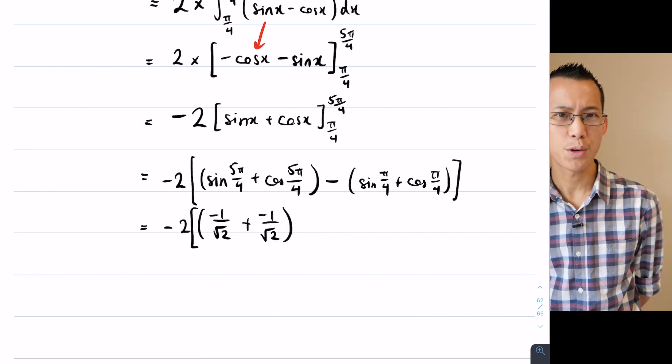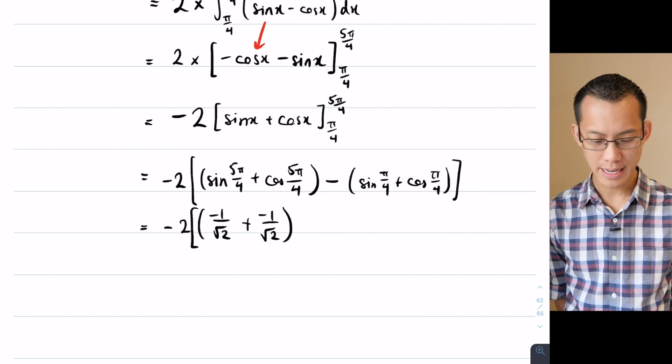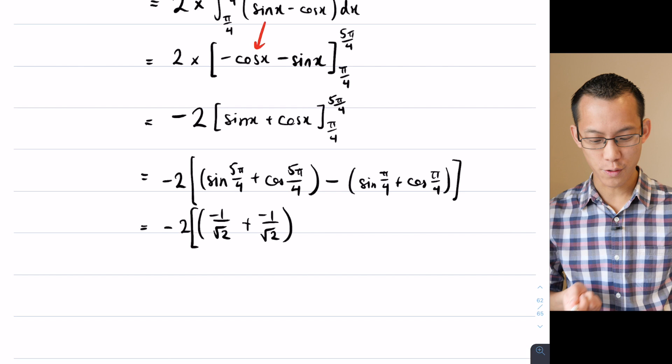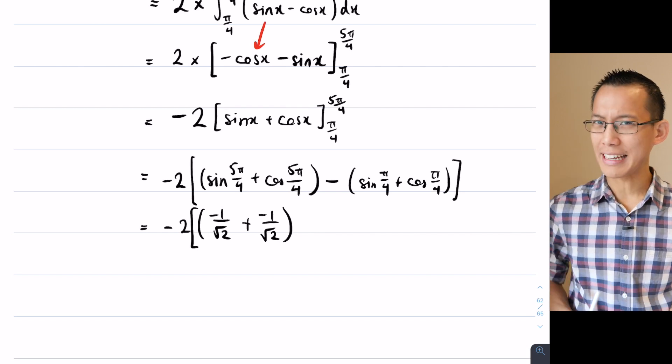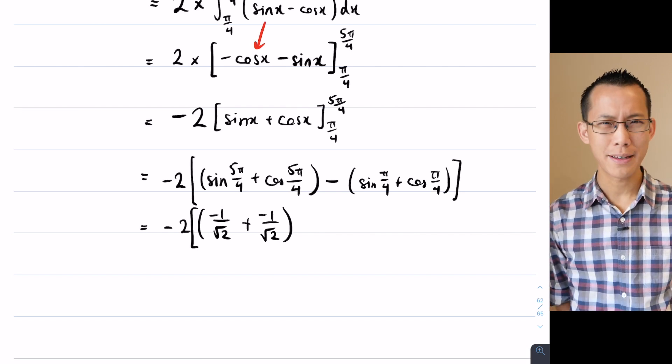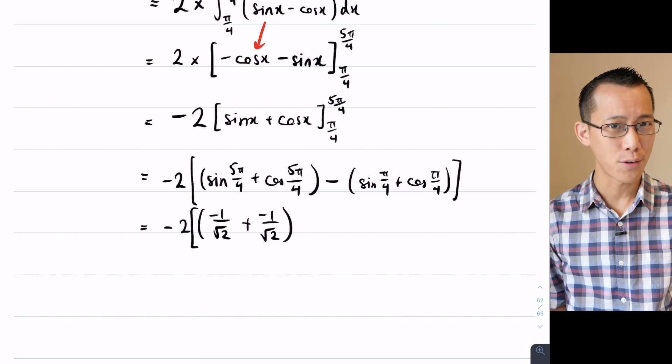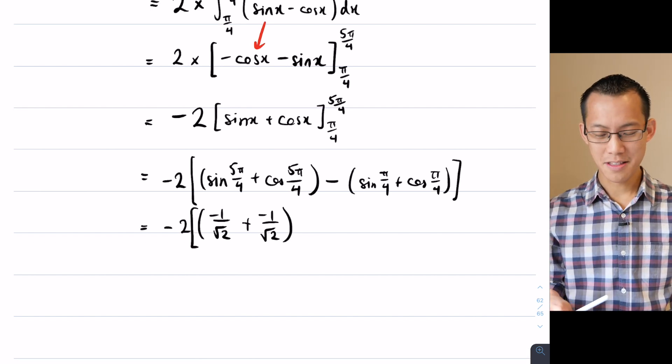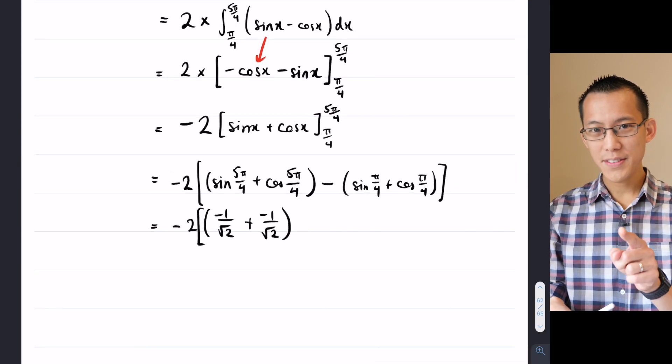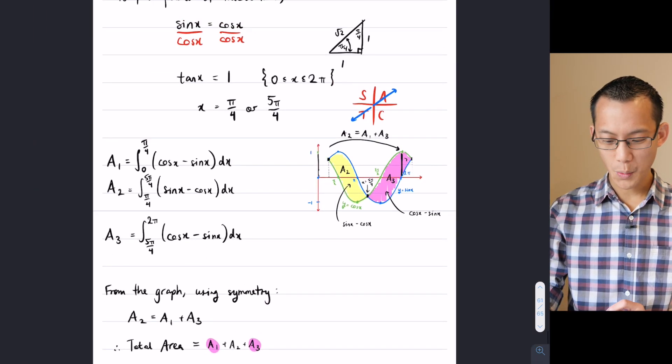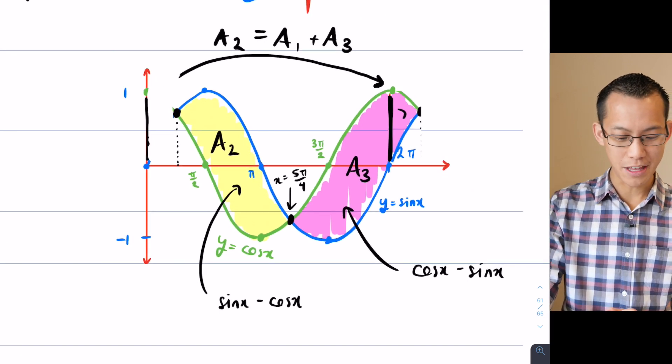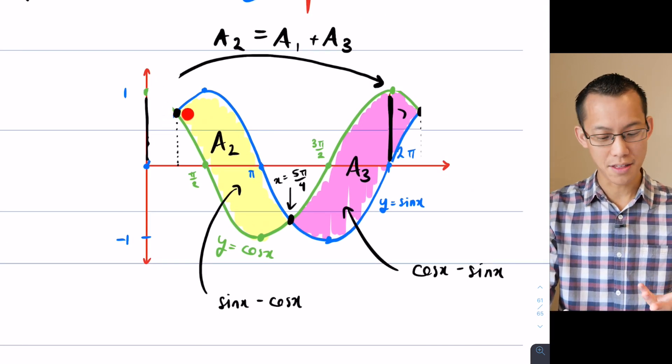And cos of 5 pi on 4 is also negative 1 on root 2. Now you might have wondered, how did I know so quickly that those two values would be the same? Well, think for a second. Pi on 4 and 5 pi on 4, which appear as our boundaries here, where did I get those values from again? Like why is 5 pi on 4 important to me or why is pi on 4 important to me? And the answer is, they're not random points, they're points of intersection. They're points where the two graphs, sine and cosine, they coincide with each other.